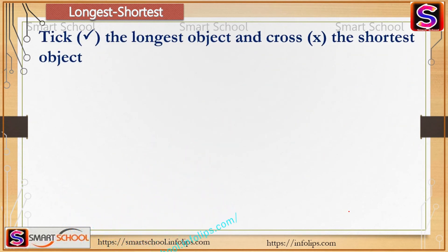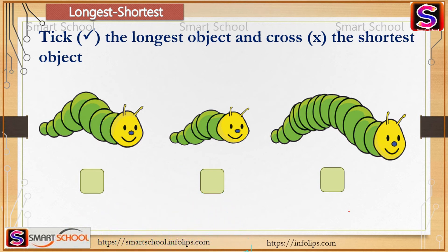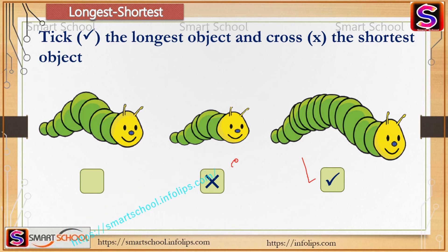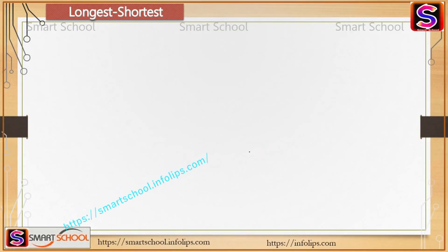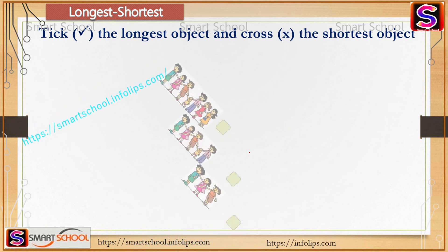Tick the longest object and cross the shortest object. There are three caterpillars — the third one is the longest and the middle one is the shortest, because the middle one has very little length.